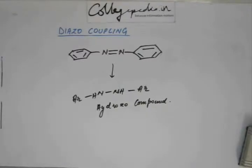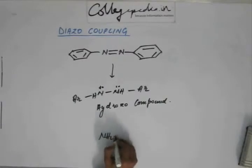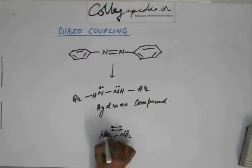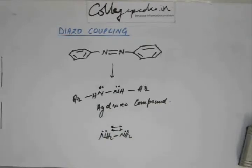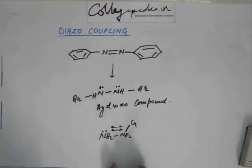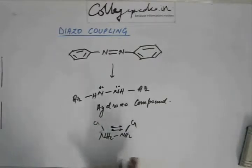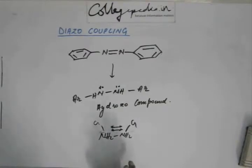Now when we have a hydrazo compound, one last thing we have to talk about in azo coupling is that this hydrazo compound can have rearrangement. As we discussed when talking about addition of hydrazine — perhaps in Wolf-Kishner reduction — when we have 2 atoms adjacent to each other and they have lone pairs, there is inter-electronic repulsion between those 2 atoms. Those 2 atoms generally try to make a bond; the lone pair goes into a bond pair. Bond pair and bond pair repulsion is considerably less than lone pair and lone pair. This is called the alpha effect.